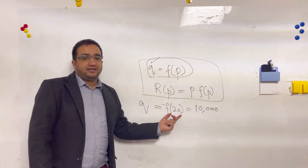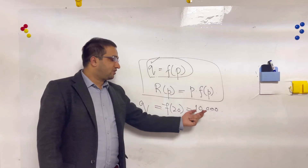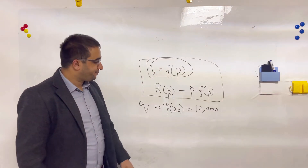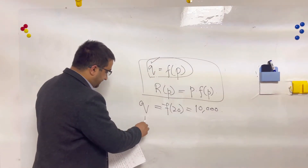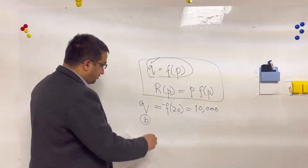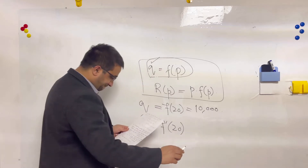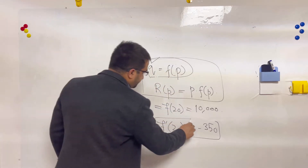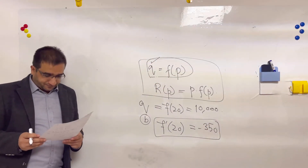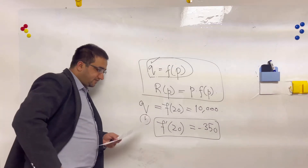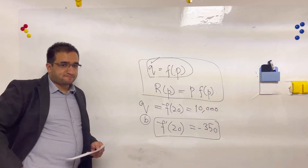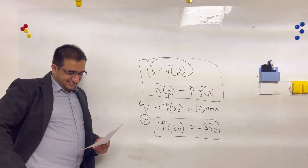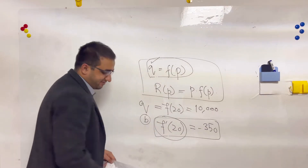So F of 20 = 10,000 simply gives the amount of production when the price per unit is 20. The second part asks: what does F'(20) = -350 mean? Now there is a derivative — a dash — involved.